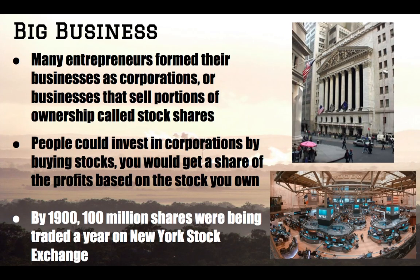So we just hit a bunch of big inventions. You'll learn a lot more about this topic in 11th grade U.S. history — this is kind of where that school year starts. Now we're going to jump to big business: how is this Industrial Revolution going to affect businesses? Many people who want to start businesses — we call them entrepreneurs — are going to start creating something called corporations, which are businesses that want to sell part of their ownership in forms of things called stocks.